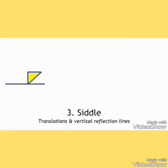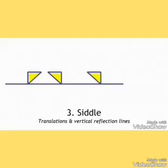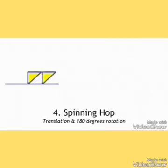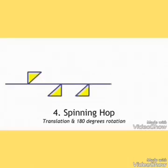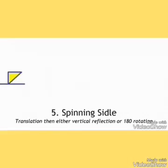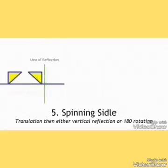Three, sito — you use translation, and then just a vertical reflection second. Four, spinning pop — you use translation first and rotate it in 180 degrees second. Five, spinning sito — you use translation with either vertical reflection or rotate it in 180 degrees.